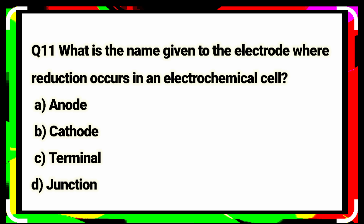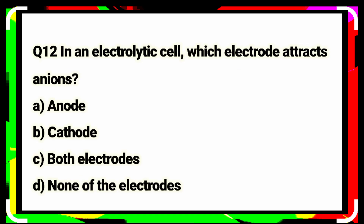Question number eleven: what is the name given to the electrode where reduction occurs in an electrochemical cell? Anode. Option A is the correct answer. Question number twelve: in an electrolytic cell, which electrode attracts anions? Anode. Option A is the correct answer.